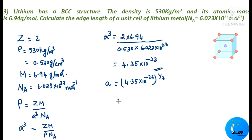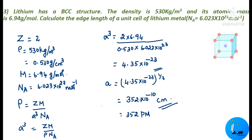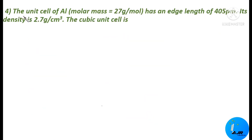Taking the cube root of 4.35 × 10⁻²³ gives a = 352 × 10⁻¹⁰ cm. If you want to express this in picometers, the edge length is 352 pm. That is the answer for the edge length of the lithium unit cell.